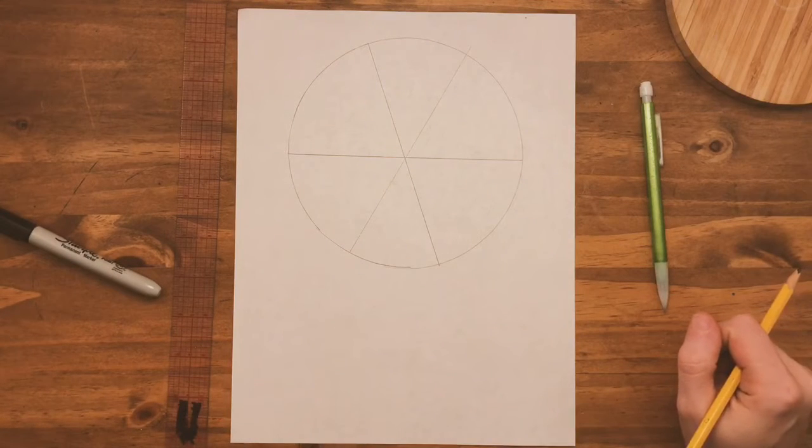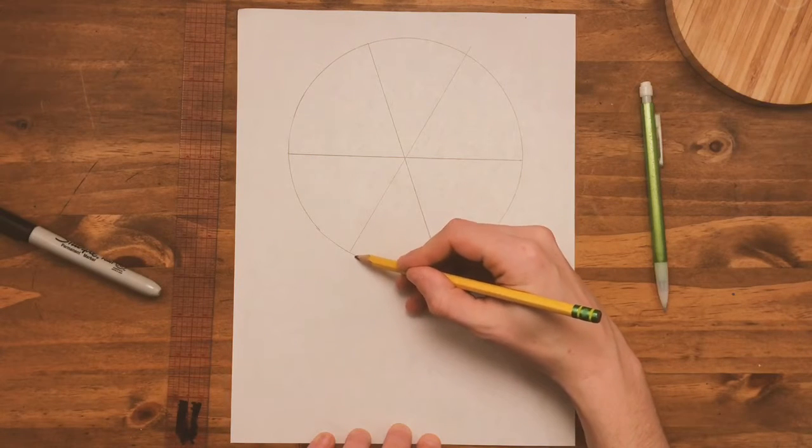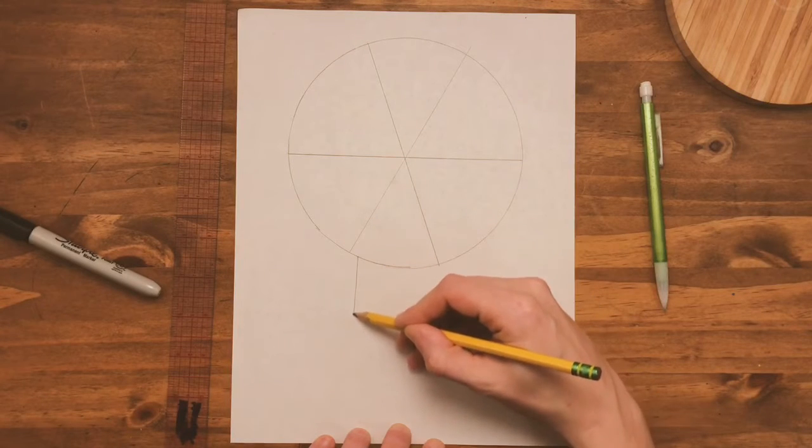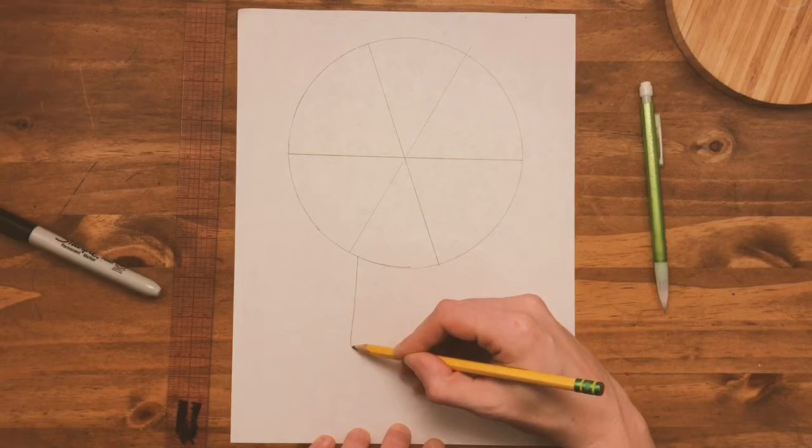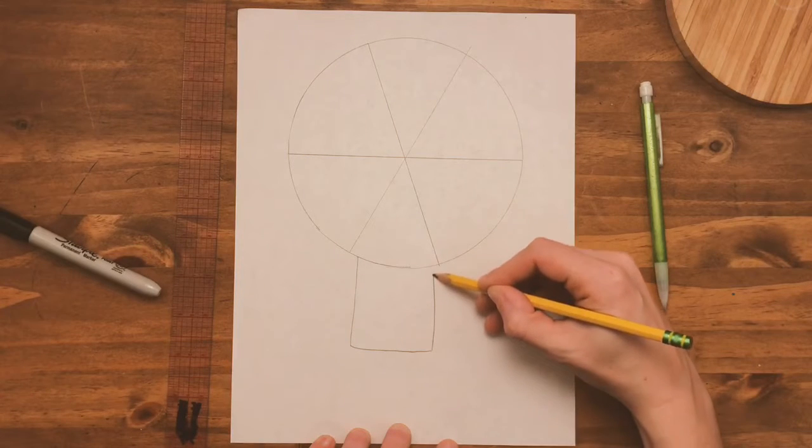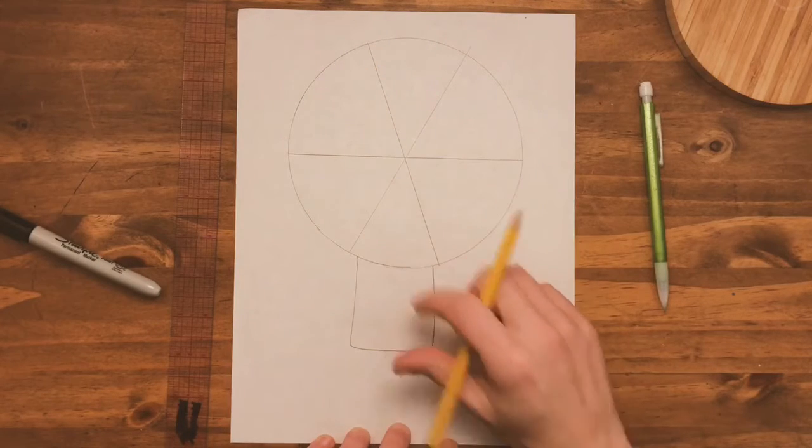Next, we're going to create the body of our person. So come down to the bottom of your color wheel and draw a rectangular shape. You do not need to use a ruler. You can freehand this. This will be the bottom half of your person. The head of your person is covered by the umbrella. So we're only going to see their coat and their arm.